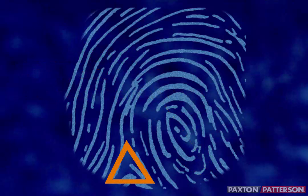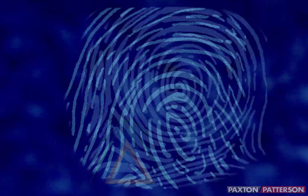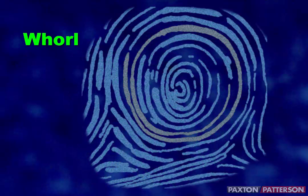In every loop there is a triangular-shaped pattern like the Greek letter Delta, where fingerprint ridges meet. In a whorl pattern, the ridges form a spiral that appears to complete a full circle. Approximately 25% of the population has whorl patterns, and there are four major whorl patterns.